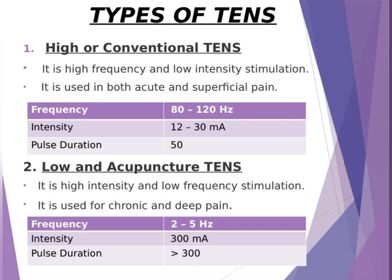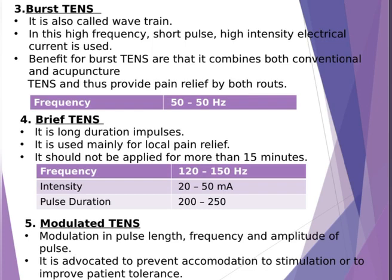There are five types of TENS. Number one: high or conventional TENS. It is a high frequency and low intensity stimulation. It is used in both acute and superficial pain. Number two: low and acupuncture TENS. It is a high intensity and low frequency stimulation. It is used for chronic and deep pain. Number three: burst TENS, also called wave drain. In this, high frequency, short pulse, high intensity electrical current is used. The benefit of burst TENS is that it combines both conventional and acupuncture TENS and thus provides pain relief by both routes.